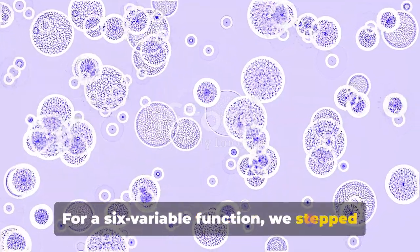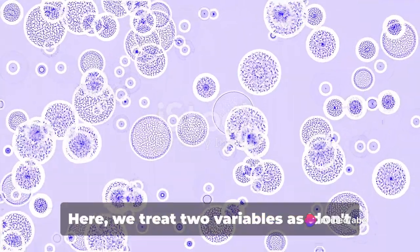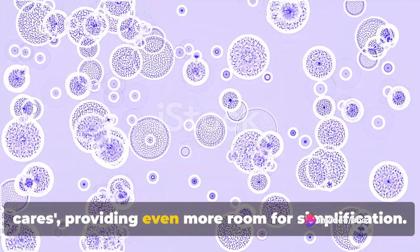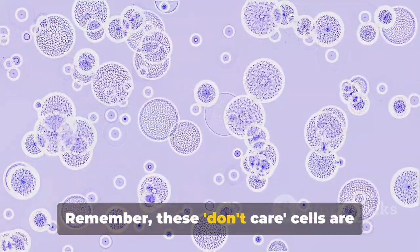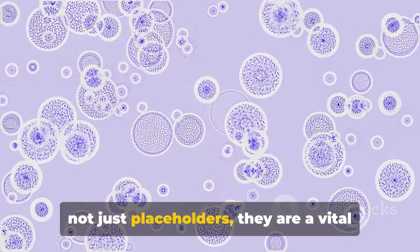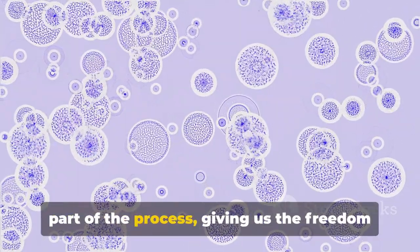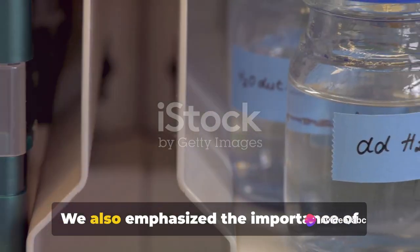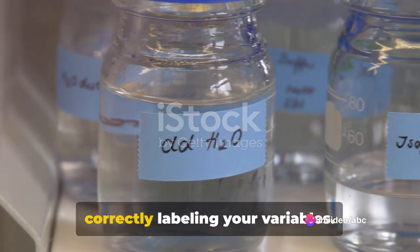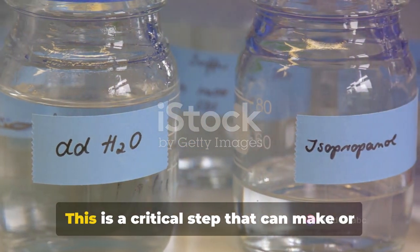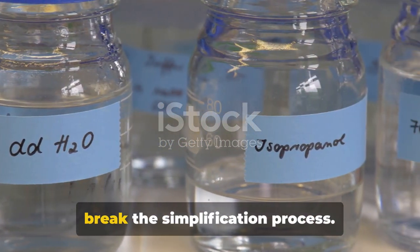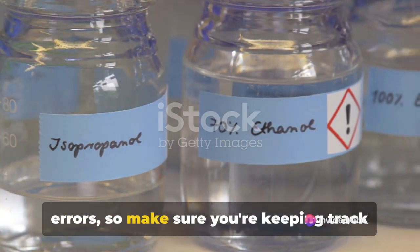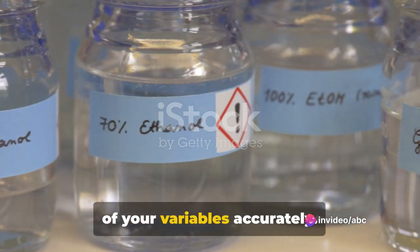For a 6-variable function, we stepped up to an 8-variable K-Map. Here, we treat two variables as don't cares, providing even more room for simplification. Remember these don't care cells are not just placeholders. They are a vital part of the process, giving us the freedom to adjust our function for the simplest result. We also emphasized the importance of correctly labeling your variables. This is a critical step that can make or break the simplification process. Mislabeling can lead to confusion and errors, so make sure you're keeping track of your variables accurately.